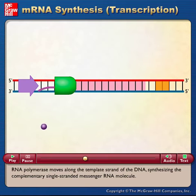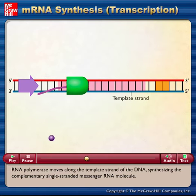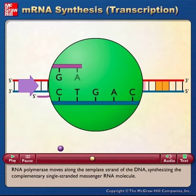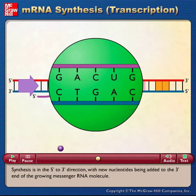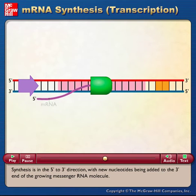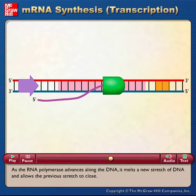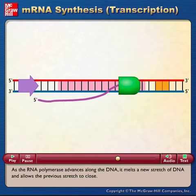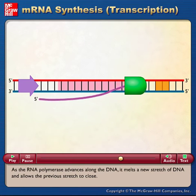RNA polymerase moves along the template strand of the DNA, synthesizing the complementary single-stranded messenger RNA molecule. Synthesis is in the 5' to 3' direction, with new nucleotides being added to the 3' end of the growing messenger RNA molecule. As the RNA polymerase advances along the DNA, it melts a new stretch of DNA and allows the previous stretch to close.